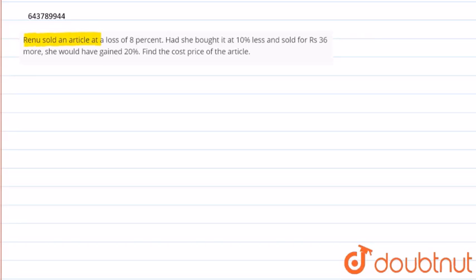Renu sold an article at a loss of 8 percent. Had she bought it at 10 percent less and sold it for rupees 36 more, she would have gained 20 percent. We need to find the cost price of the article.